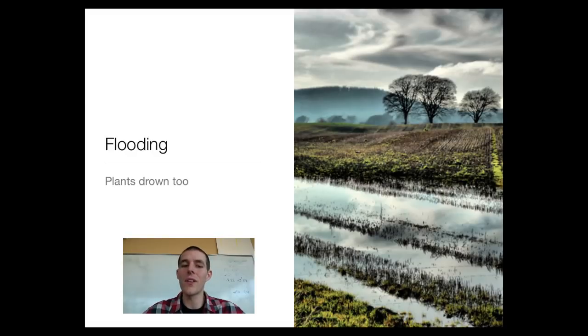Next stress our poor plants have to deal with is the opposite and that is flooding. A lot of people forget the fact that the roots of plants don't carry out photosynthesis, they carry out cellular respiration. So that means that they need oxygen around them in order to survive. If soil is completely flooded with water and there's no air spaces, our plants can drown. So there's a couple of adaptations.